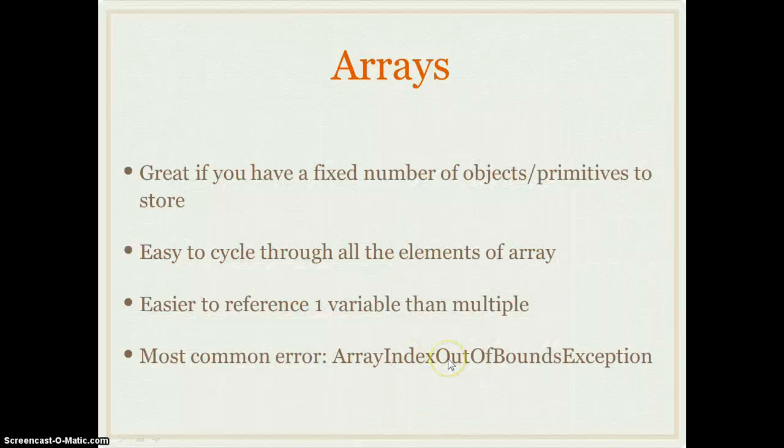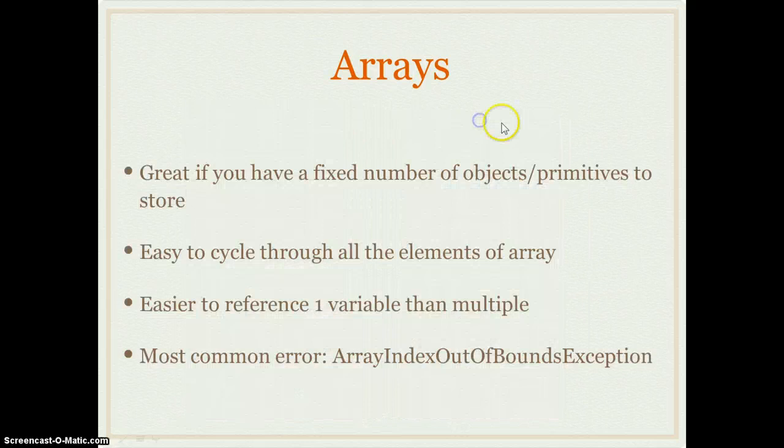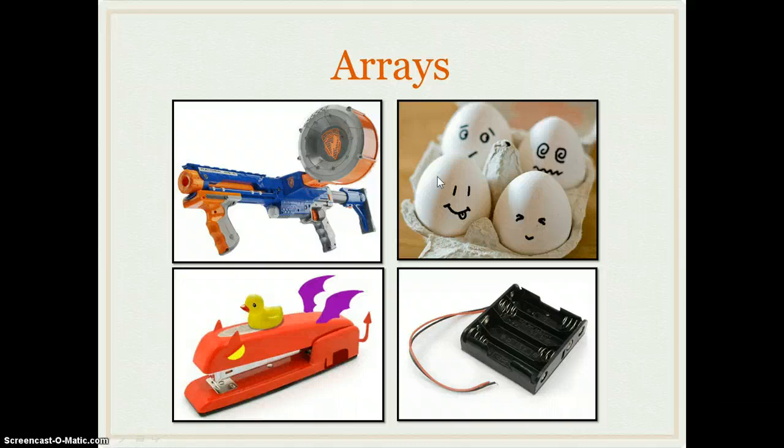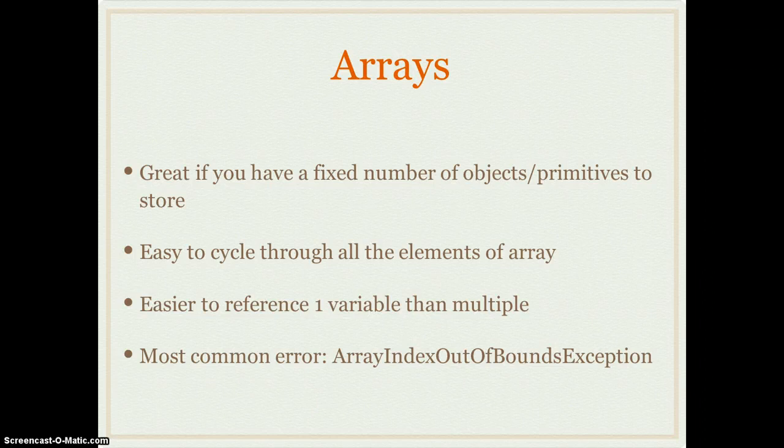It's easy to cycle through all of them. If I gave each of these eggs a number, like 0, 1, 2, 3, I could say give me egg 1, and that would point me right back here to the squirrely-eyed egg. I'd be able to address each of those things. It's a lot easier to reference one thing, one variable, than multiple.